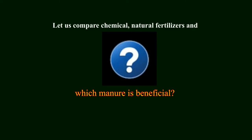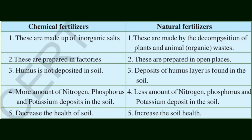Let us compare chemical and natural fertilizers. Chemical fertilizers are made up of inorganic salts, prepared in factories, and do not deposit humus in soil — they deposit more nitrogen, phosphorus, and potassium but decrease soil health. Natural fertilizers are made by decomposition of organic plant and animal wastes, prepared in open places, deposit humus in soil, and increase soil health.